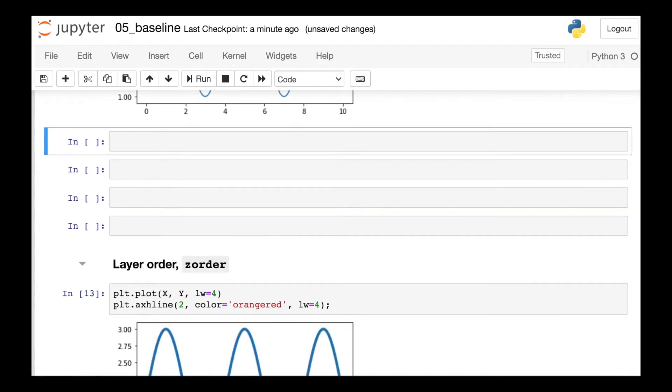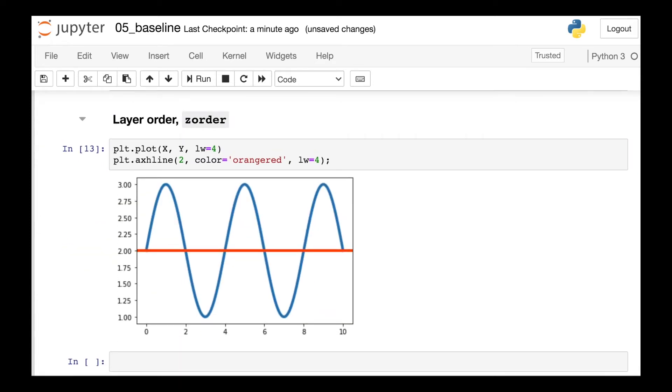Another property that I use pretty frequently is called zorder. So zorder basically just tells Matplotlib what order you would like those layers to be plotted. So right now you'll see that my orange baseline is on top of my sine wave, but I can change this if I'd like.